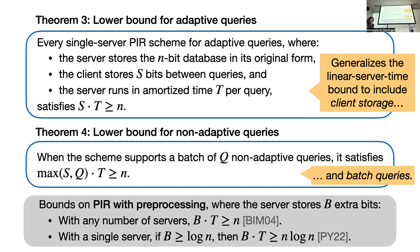I'd also like to mention related work on lower bounds for PIR with preprocessing. In the PIR with preprocessing setting, the server has B extra bits of storage and the client has no extra storage — S = 0. In that setting, prior work proved that with any number of servers, the product of server storage B and server time T must be at least N. Very recently, Persiano and Yeo strengthened this bound in the single-server setting, showing that if B is large enough, then B·T must be at least N log N. Since these bounds deal with server storage rather than client storage, they are orthogonal to ours. The B extra bits denote the size of the database encoding — in addition to the N bits of storage, the server is allowed B bits that can depend in any way on the database.